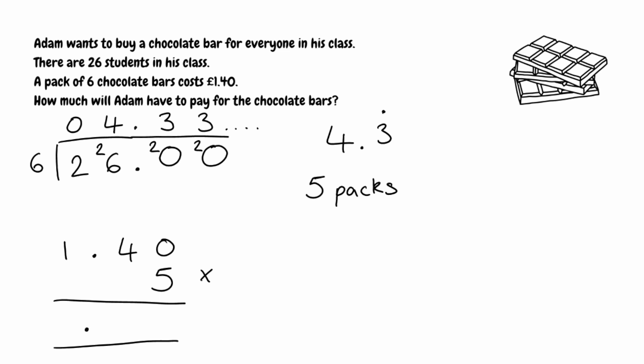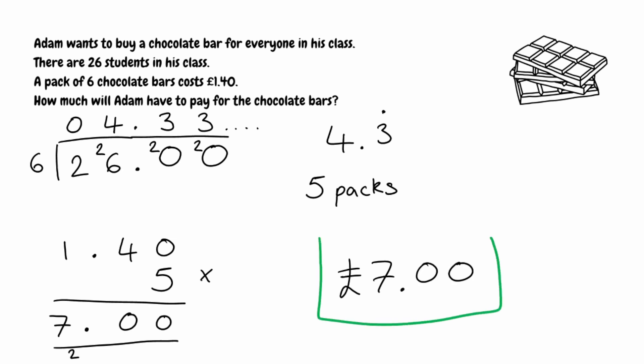5 times 0 gives us 0. Then 5 multiplied by 4 is 20, so we put a 0 in that column and carry the 2. Finally, 5 multiplied by 1 is 5, and adding the carried 2 gives us 7. So in total, Adam is going to have to pay £7. That's our answer for this one.